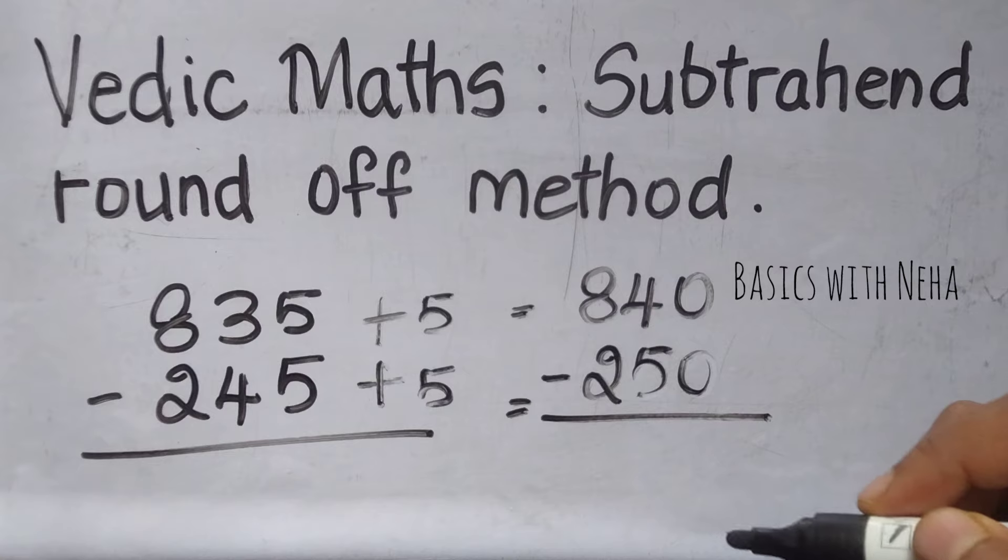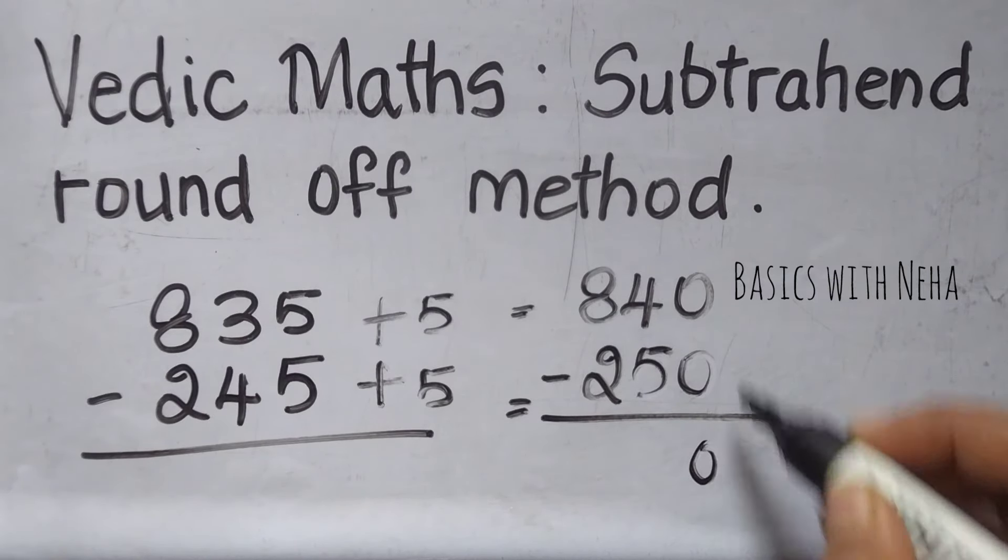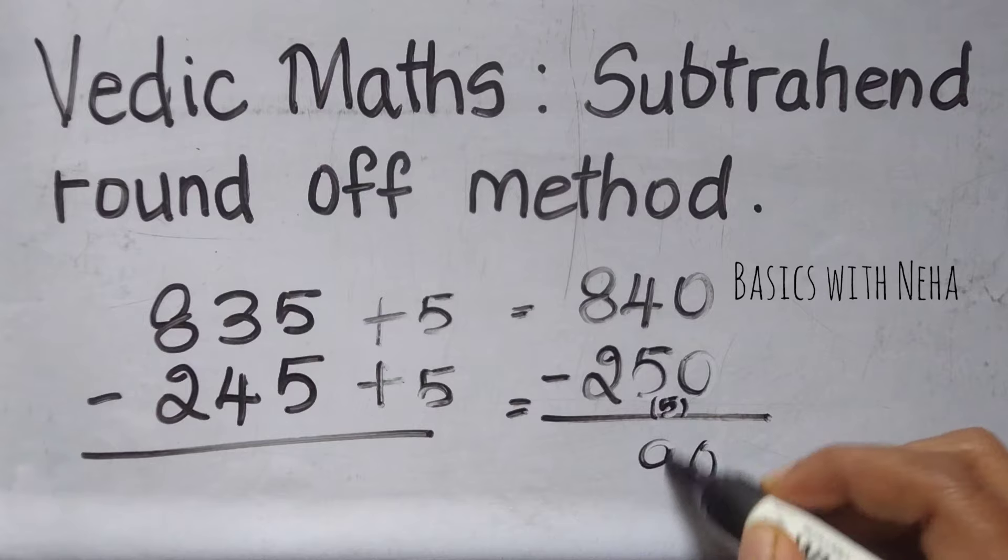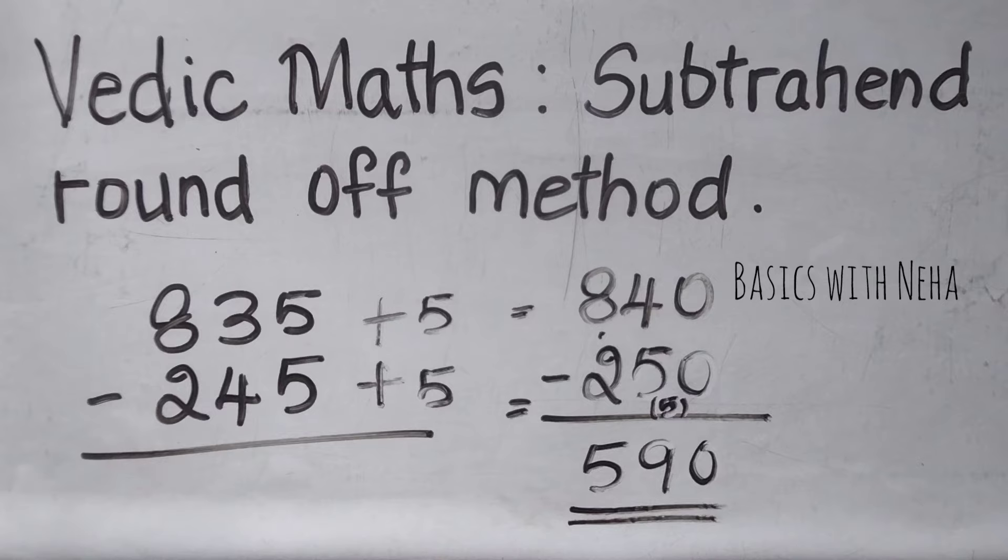Now, this can be solved using the dot method or the vinicular method of subtraction. So let's use the dot method. 0 minus 0 is 0. I'll take the complement of 5. 5 plus 4 is 9. I'll take a dot. 8 minus 3 will be 5. So my final answer is 590.